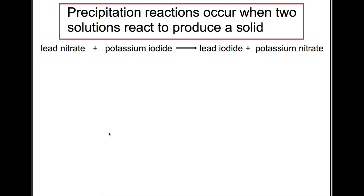Precipitation reactions occur when two solutions react to produce a solid. A reaction that you may have seen in class is where you mix lead nitrate and potassium iodide, which are both colourless and clear solutions, and when you mix them together you produce a bright yellow solid which is lead iodide.